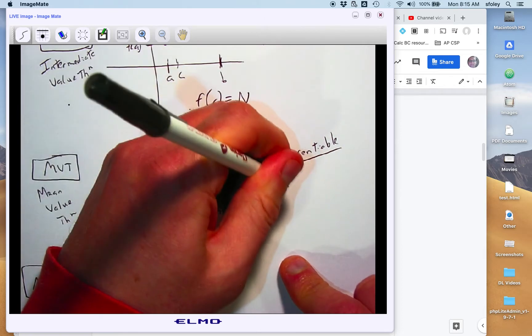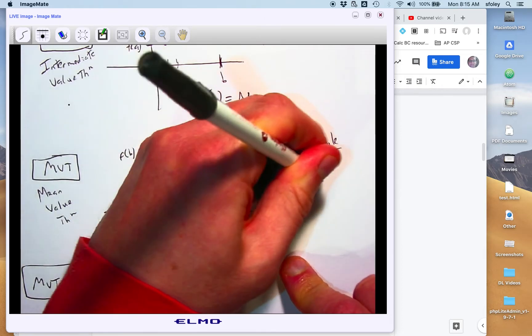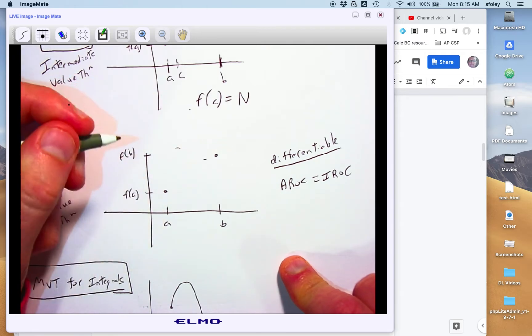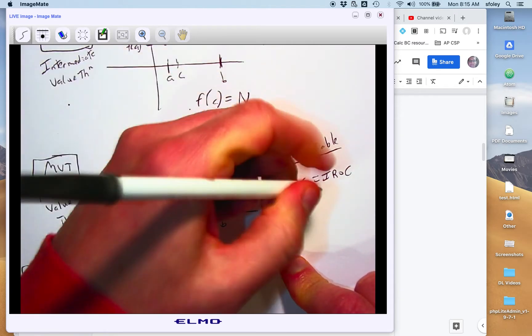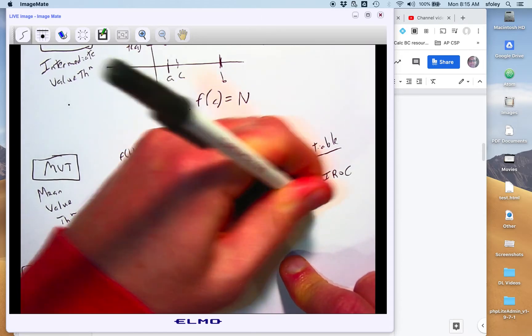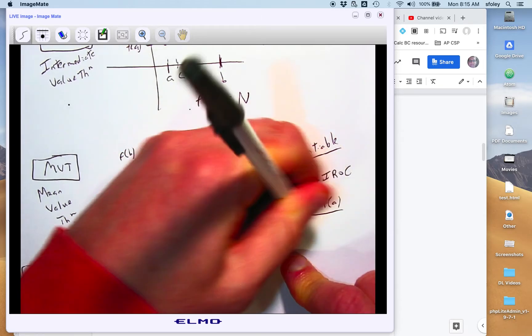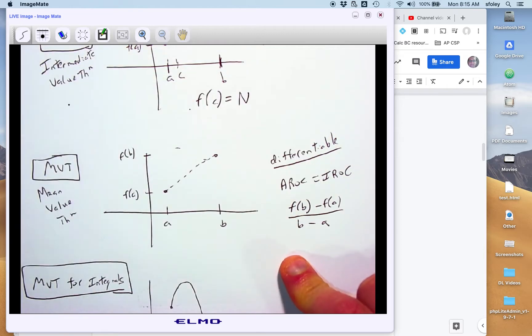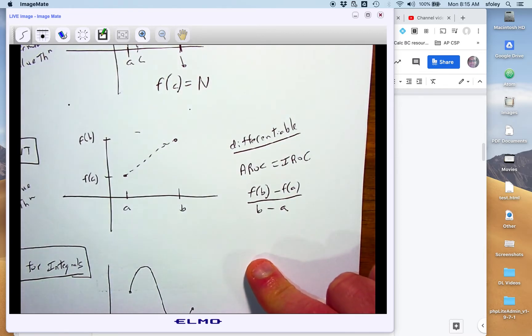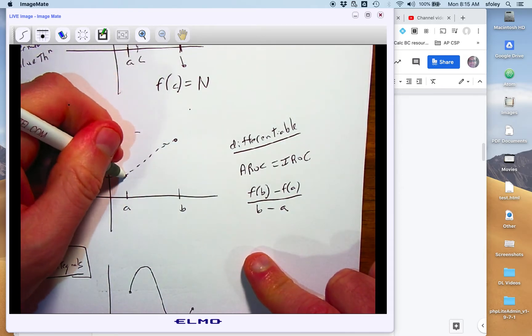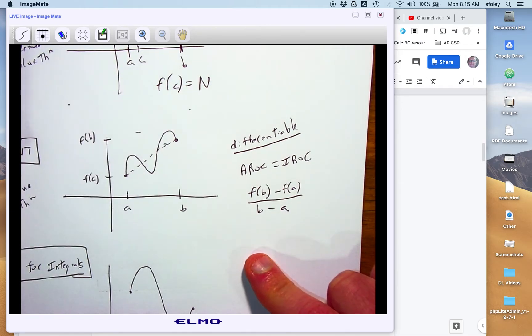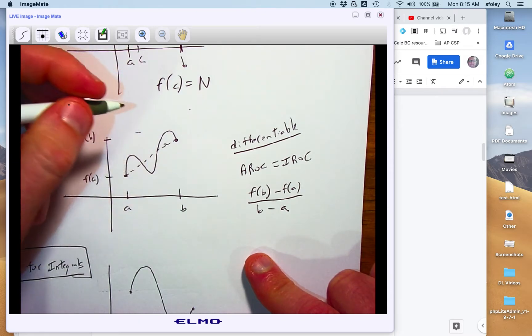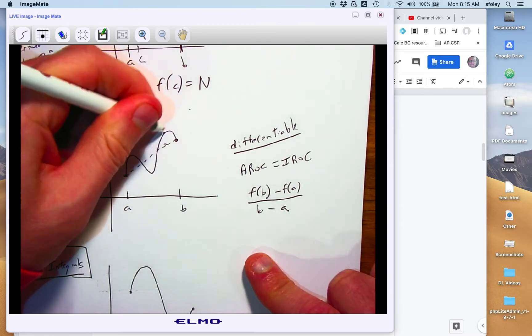And this is the good old AROC equals IROC theorem. So it says that if you find the AROC, which is the average rate of change, which is simply the change in y over change in x between those two endpoints, so good old slope formula, it says that if you've got a curve connecting them, no sharp corners, there will be at least one place, and the way I drew this graph, it looks like there's several.